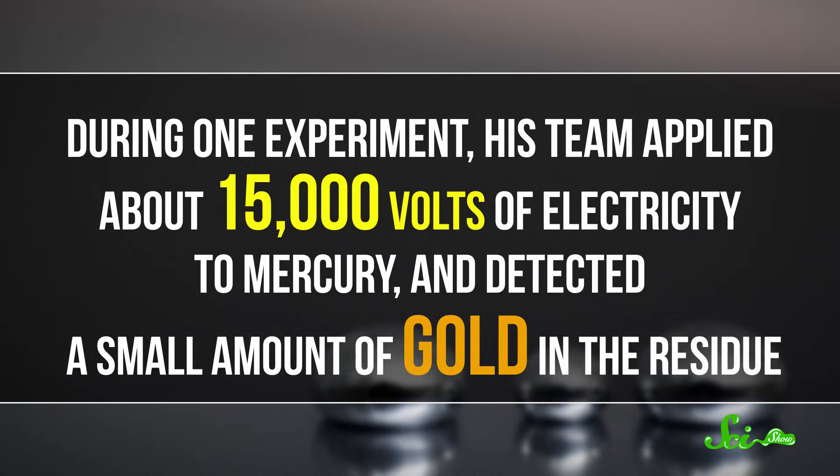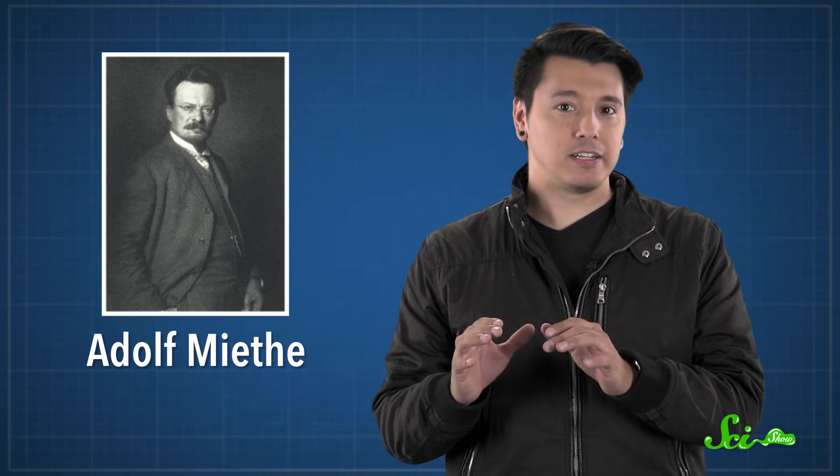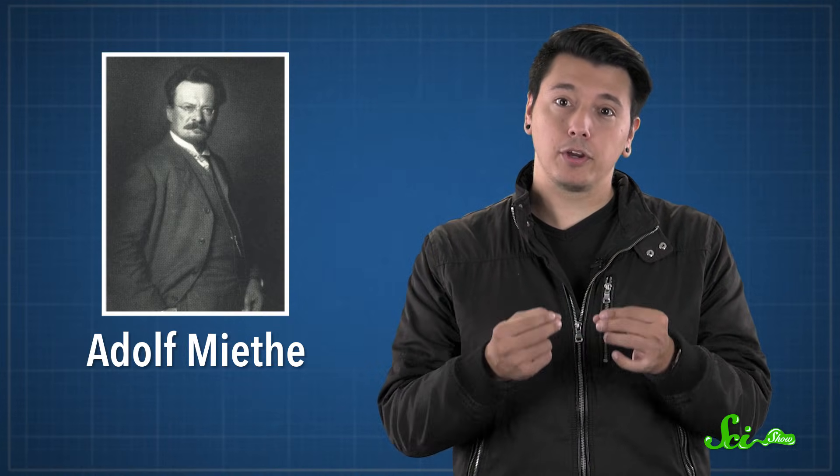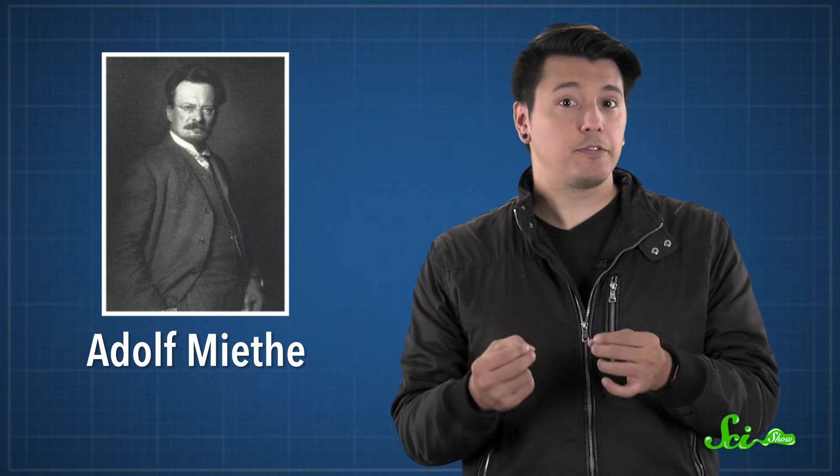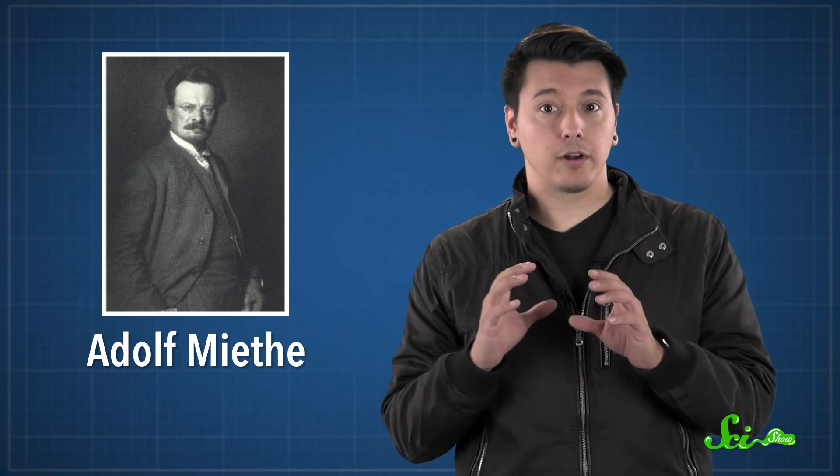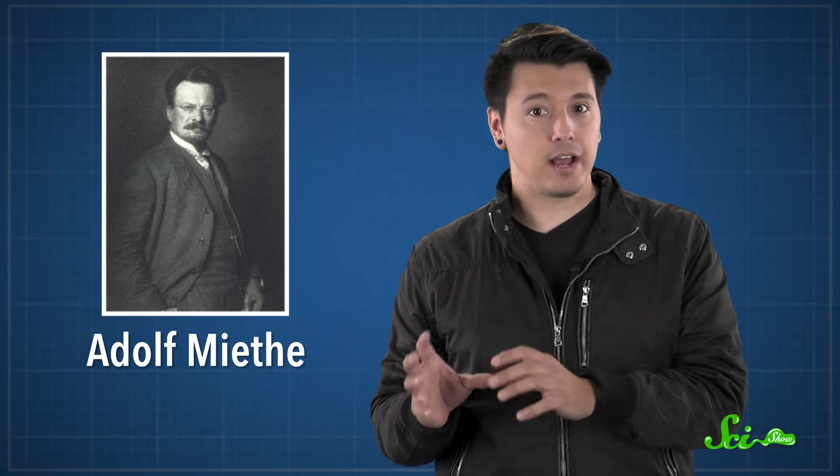Their work caught the eye of German researcher Adolf Mieta. He was intrigued because he'd found gold in the residue of a mercury vapor lamp. So Mieta modified Nagaoka's experiment and ran the current through a mercury lamp for nearly 200 hours. He claimed to have made gold, and even filed a patent for the process. But there were many criticisms of his methods, and efforts by other scientists to replicate his findings failed.